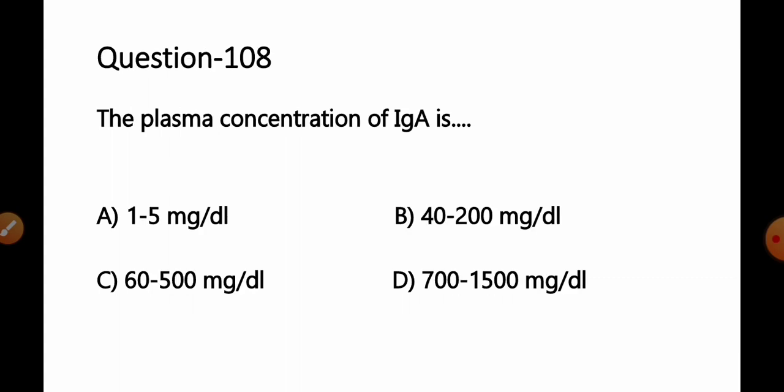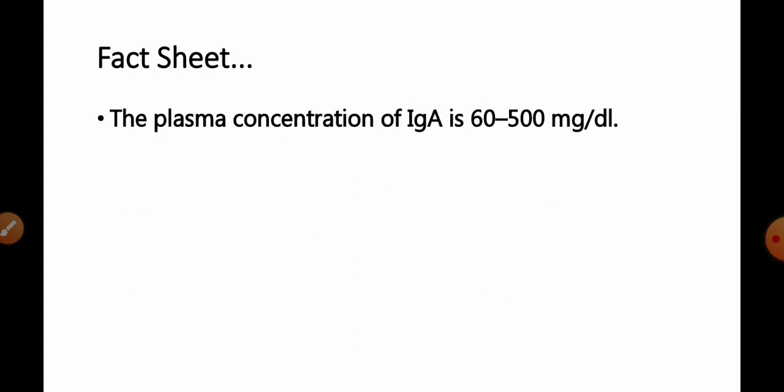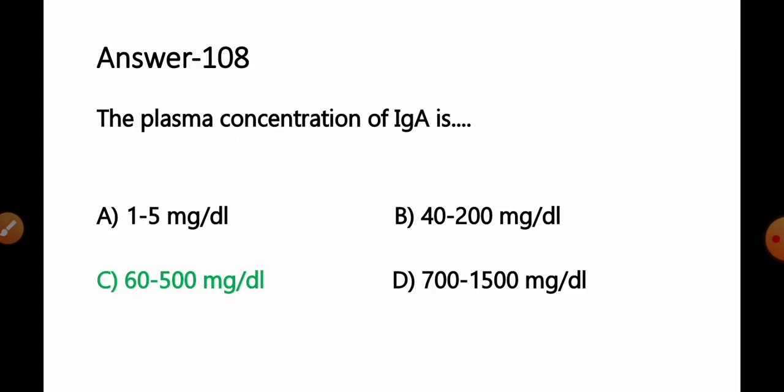Move to the next. Question number 108. The plasma concentration of immunoglobulin A is option A. 1 to 5 mg per deciliter. B. 40 to 200 mg per deciliter. C. 60 to 500 mg per deciliter. D. 700 to 1500 mg per deciliter. For this question you have to remember. The plasma concentration of immunoglobulin A is 60 to 500 mg per deciliter. So we can say option C. 60 to 500 mg per deciliter will be the correct answer for this question.